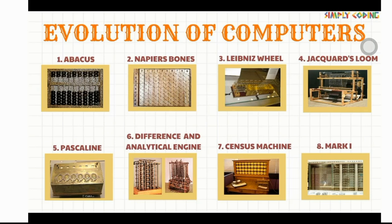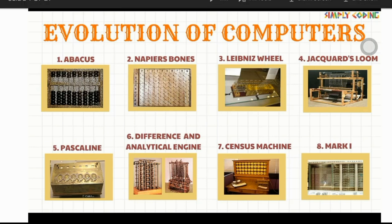As you can see, there are a total of 8 images of different devices. I would like to tell you that all these devices were used for doing calculations. The need to keep track of numbers led to the invention of different calculating devices, starting from the Abacus, the first calculating device. Many devices were invented, so today we will discuss all of them.